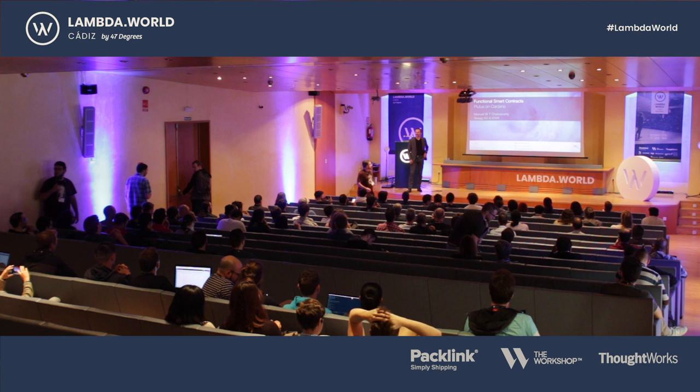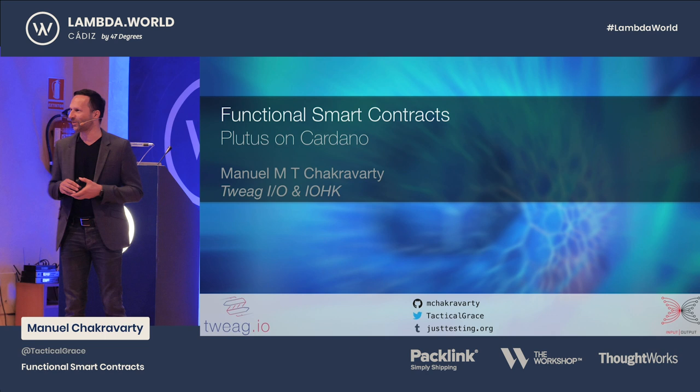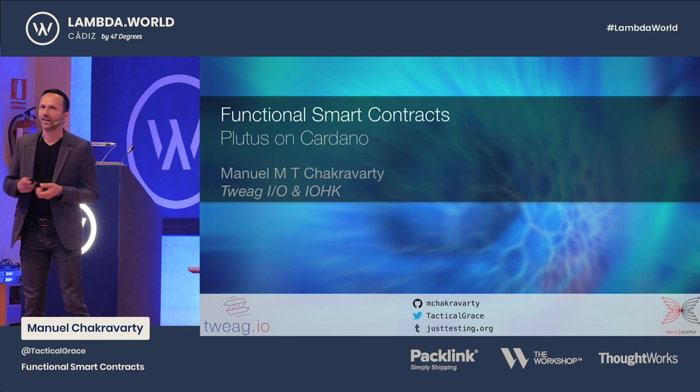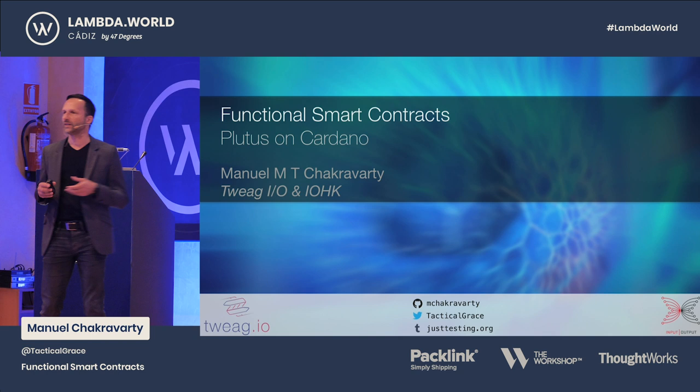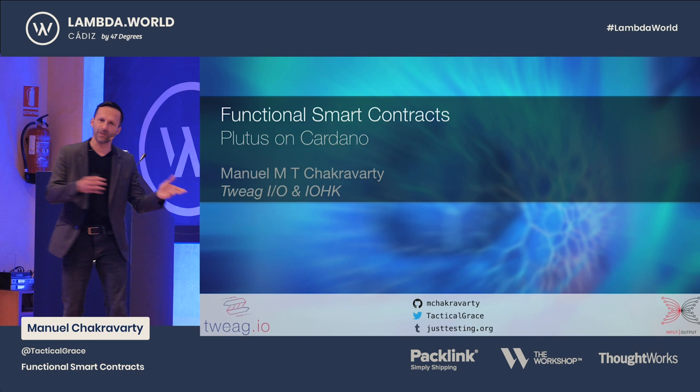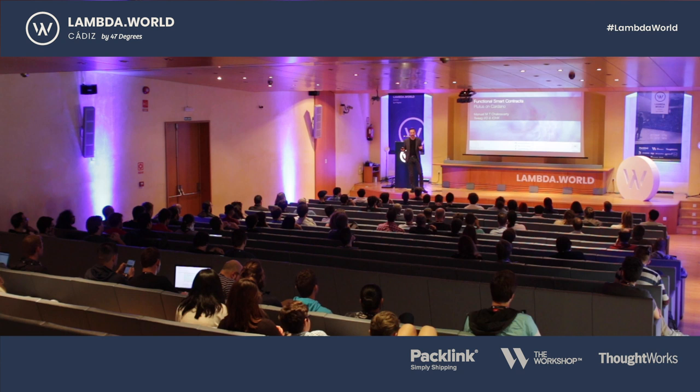Hi, everybody. Thanks very much for coming to my talk, and thank you very much to the organizers of the conference for having me, inviting me to this very nice conference. What I want to do today is to tell you how functional programming and the research-based approach is really the right way to go about developing blockchains and smart contract applications on top of them. And along the way, I will tell you what we are busy with in the Plutus team at IOHK, which I'm leading.